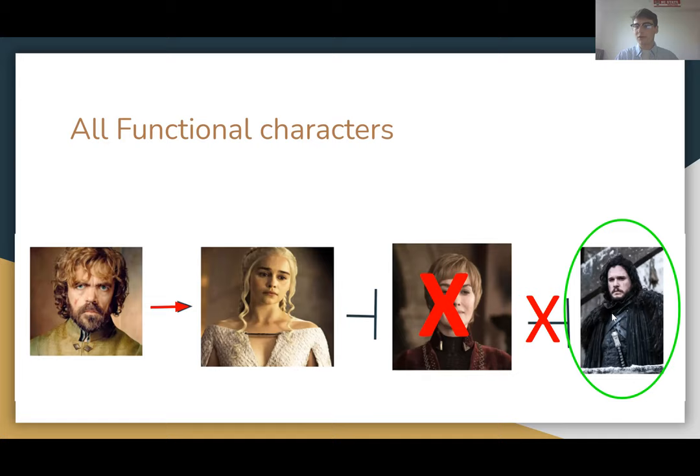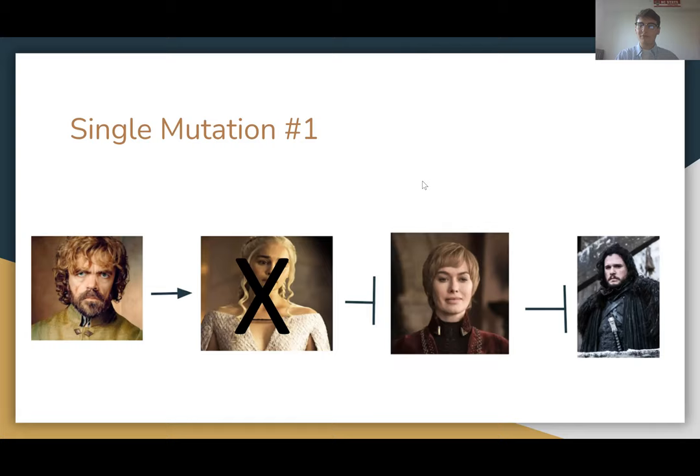For single mutation number one, we're going to mutate Daenerys so she is no longer functional and cannot do her job. Tyrion is still going to try to activate her, but nothing's going to happen — she is not activated, which means she cannot repress Cersei. With Cersei fully functional, she is going to repress Jon Snow, taking him out of the picture and ensuring that the wrong leader is put on the throne, putting Westeros into chaos.